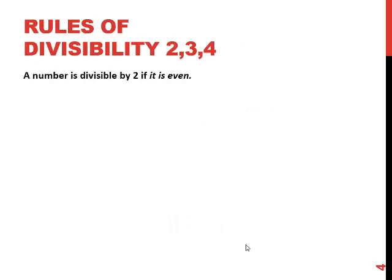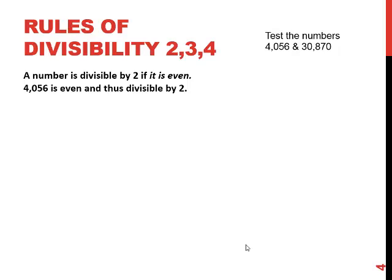Rules of divisibility. 2 is pretty quick and easy: a number is divisible by 2 if it is even. We're going to test a couple of numbers, 4,056 and 30,870. So looking at these two numbers, 4,056 is an even number and thus it's divisible by 2. In other words, another way of saying this is an even number is 2 goes into the very last digit. Likewise 30,870 is divisible by 2 because 2 divides 0. In other words, 30,870 is an even number.